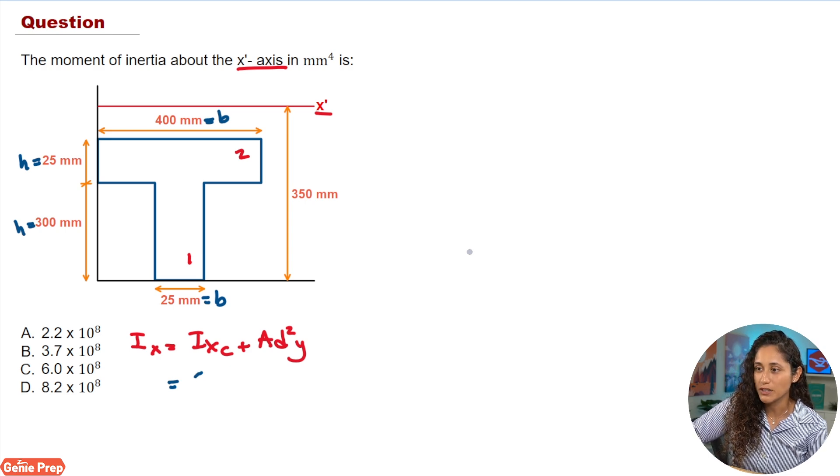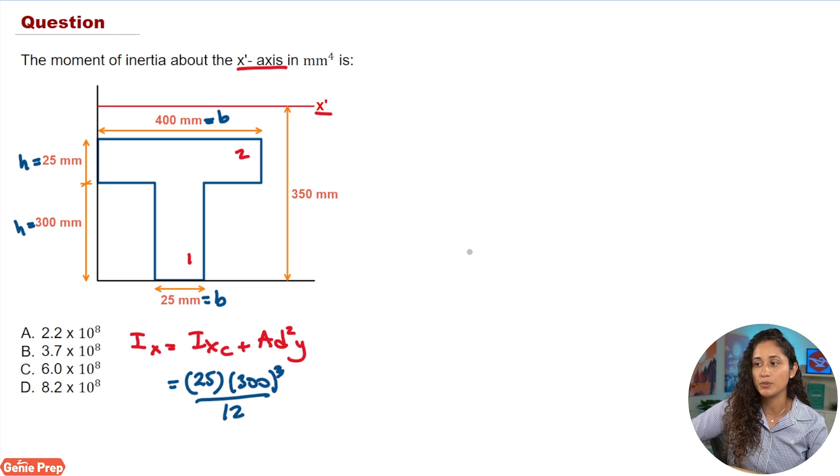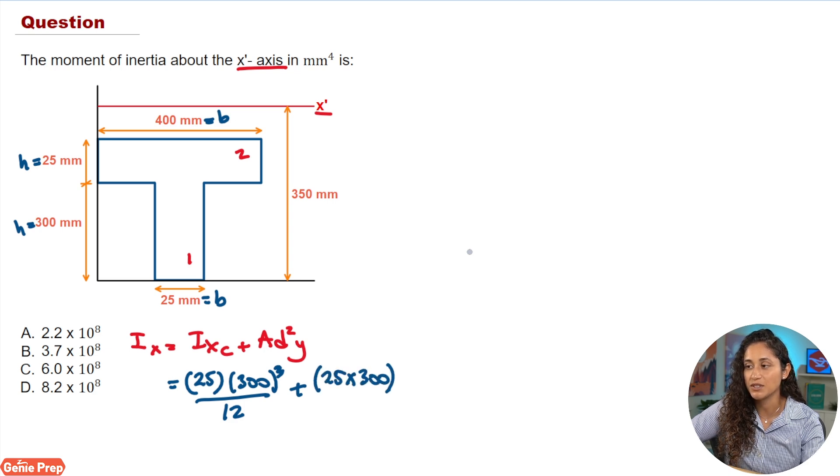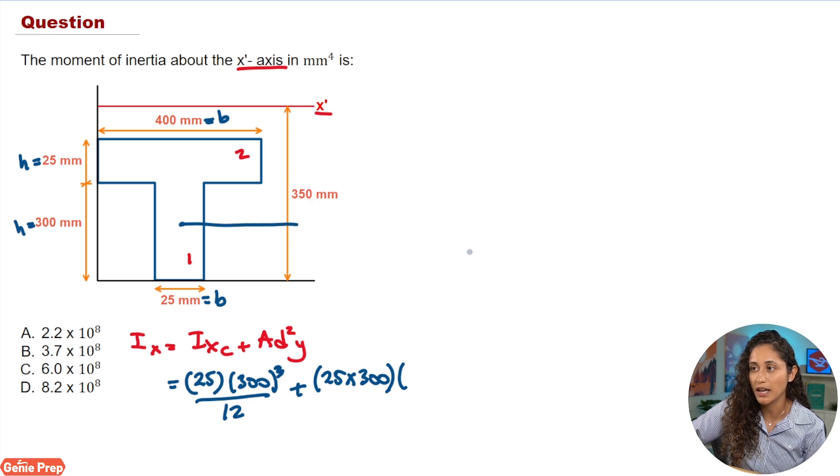So we have B is going to be 25, then 300, and we're going to cube it, and then divide it by 12. So that's going to be the BH cubed over 12. Then we're going to have plus the area for shape one, which is going to be 25 times 300, and then times DY. So DY, again, is going to be the distance from the centroid of shape one to the X prime axis. So this is exactly going to be DY1.